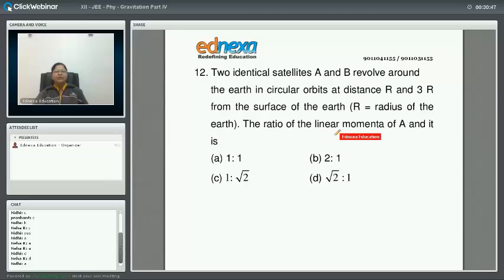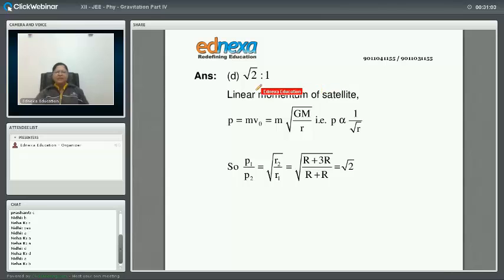You want to find out the ratio of linear momenta when two identical satellites are revolving in two different orbits of R and 3R. The answer is D. It is √2:1.